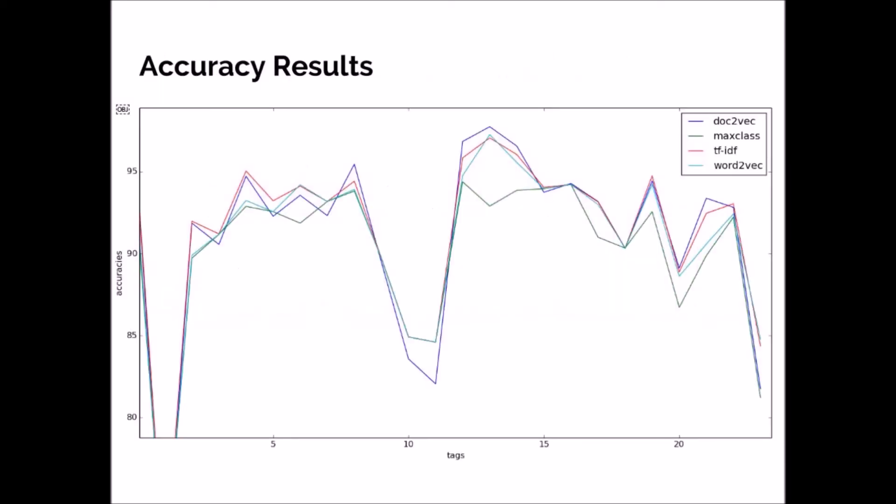And here is the accuracy. Note that our data is quite imbalanced. That is, the green line max class represents the accuracy when all vectors in testing are assigned the maximum occurring label from training. As evident, its value is almost always above 80%.